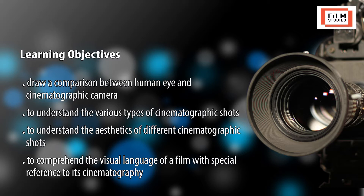The learning objectives of this lesson are: to enable the learner to draw a comparison between the human eye and the cinematographic camera; to understand the various types of cinematographic shots; to understand the aesthetics of different cinematographic shots; and to comprehend the visual language of film with special reference to its cinematography.